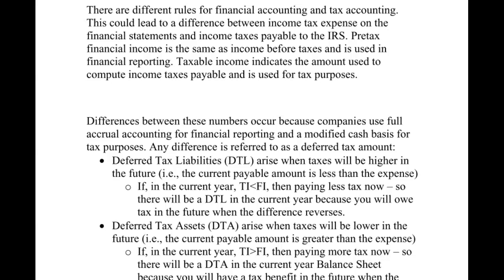What we focus on here is the fact that there are different rules for financial accounting and tax accounting. We use generally accepted accounting principles for our financial accounting, and then we use our IRS tax code to determine how much taxes we owe to the government.